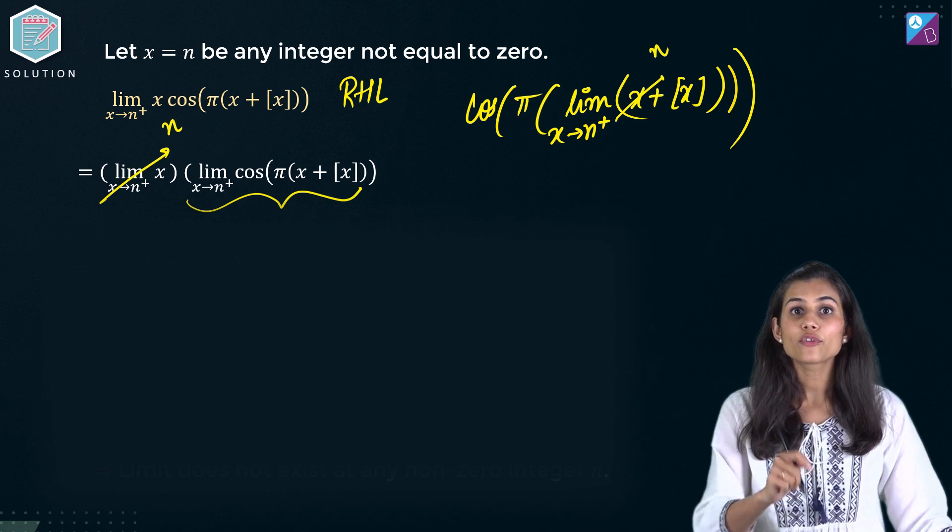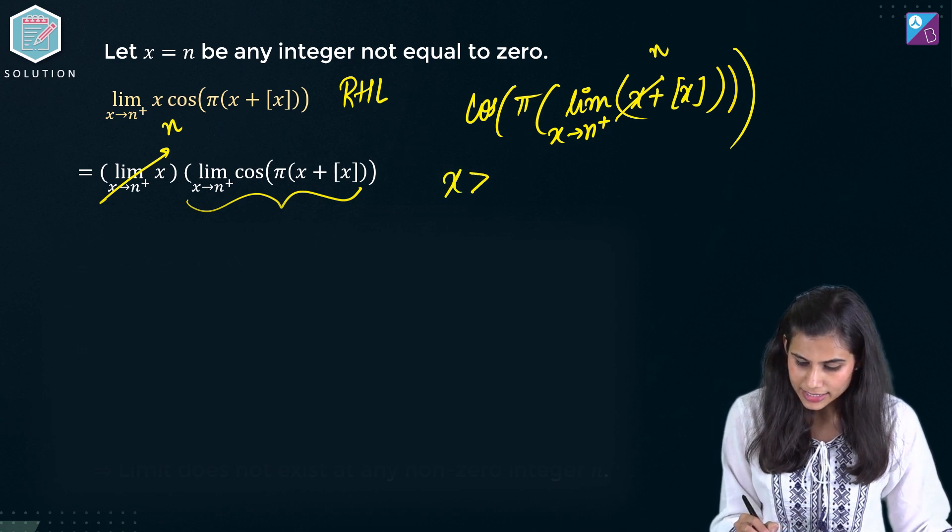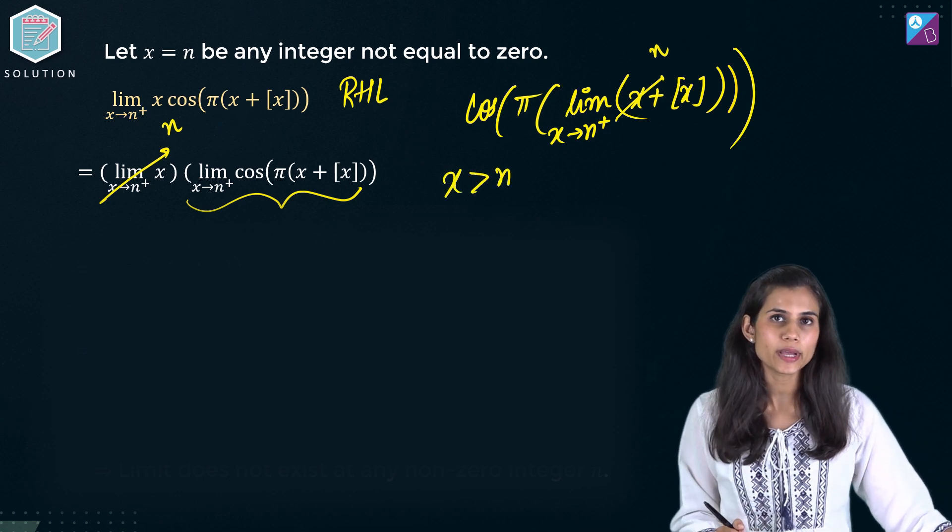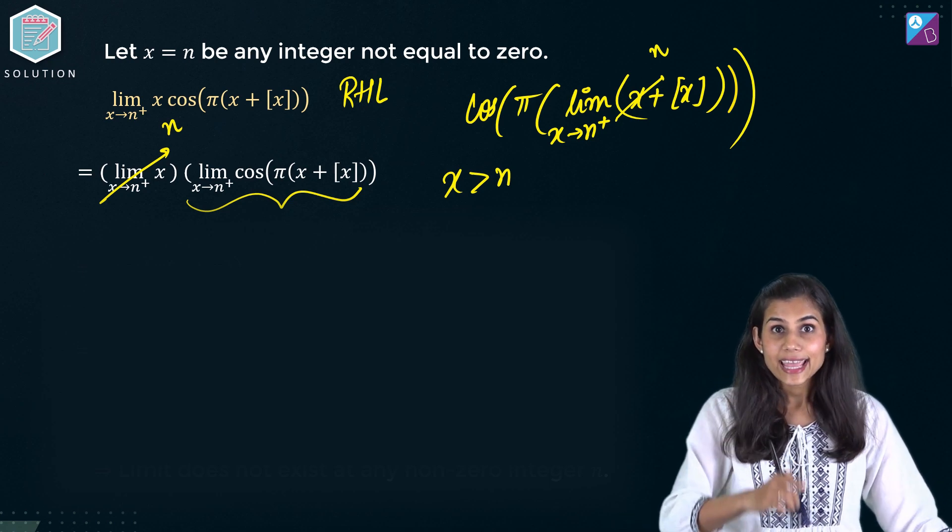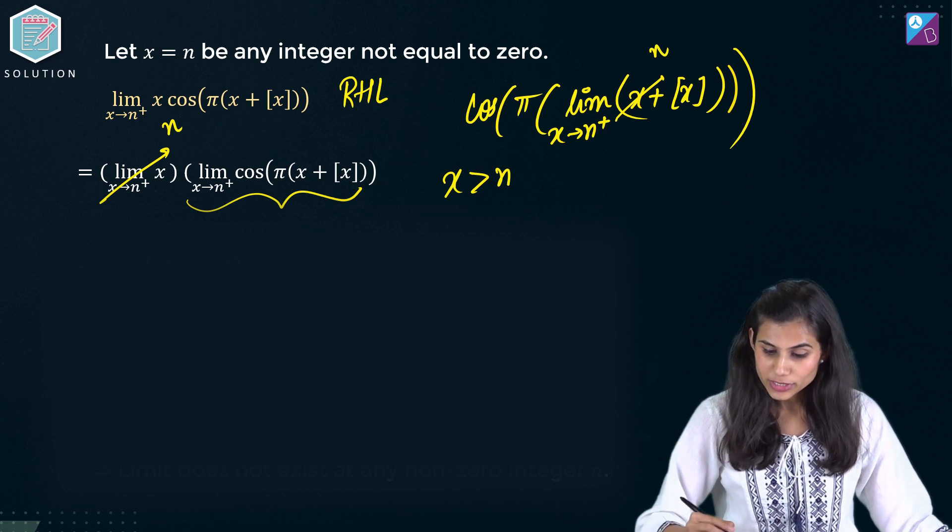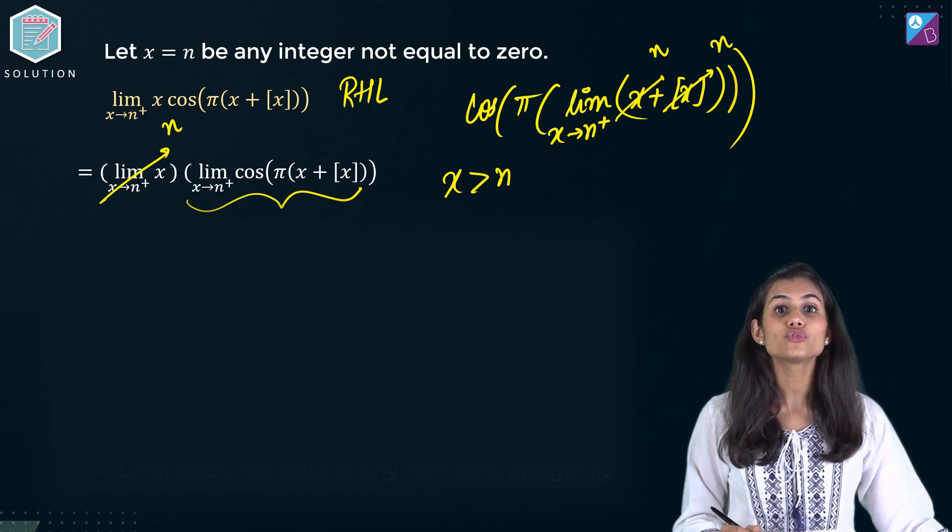x is approaching to n from the positive. That means x is greater than n but very very close to n. So what are those two consecutive integers between which x is sitting? n and n plus 1. So its gif will approach to n. Correct?